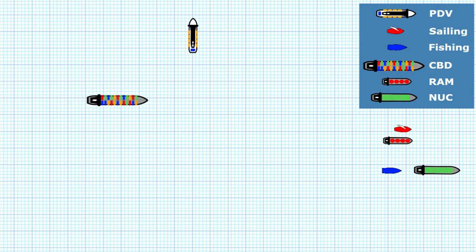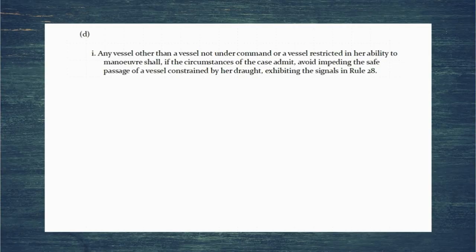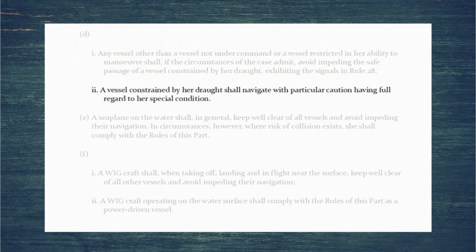The power-driven vessel is in the wrong here — they should have come round and avoided impeding the safe passage — but under the collision regulations the constrained-by-draft vessel remains the give-way vessel and must still give way. The second part of part D clarifies this, saying the vessel constrained by draft shall navigate with particular caution having full regard to her special condition. Since she cannot deviate from her course, her only option is to slow right down, and she must be able to do that in an instant.